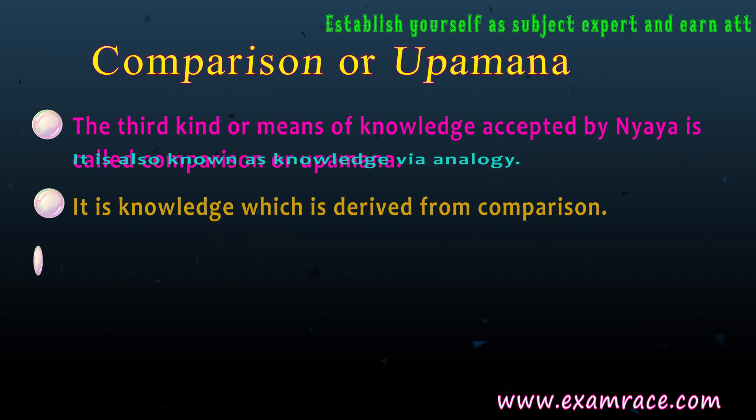According to Nyaya, a word signifies an object and a sentence is a collection of words. In order for a sentence to be intelligible, the words of the sentence must fulfill four conditions. The first is: 1. Akanksha — it means mutual implication or expectancy. The words of a sentence are interrelated and stand in need of one another in order to express a complete sense. For instance, 'cow, horse, man, an elephant' would be a sheer nonsensical statement.